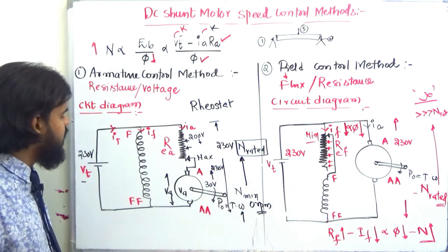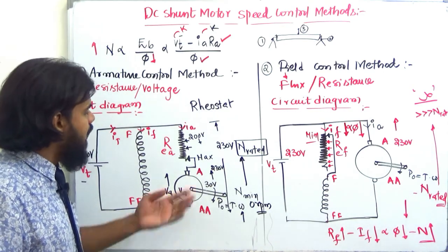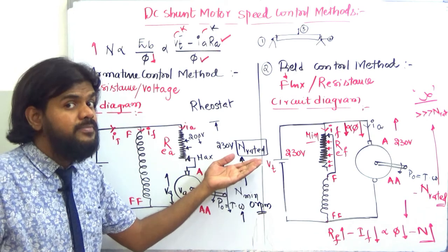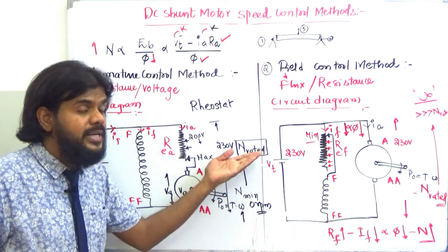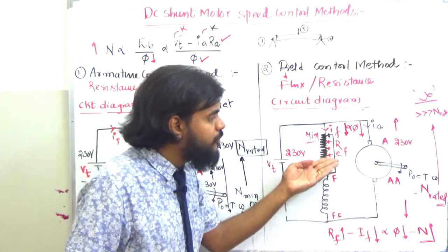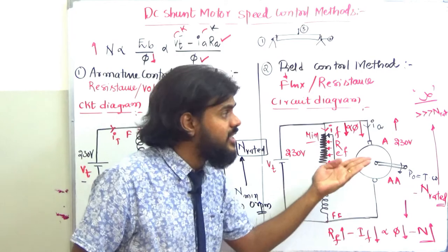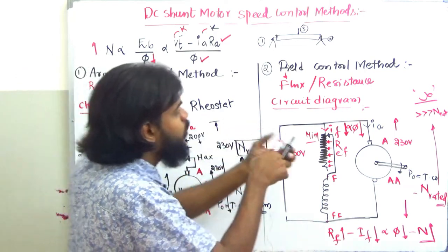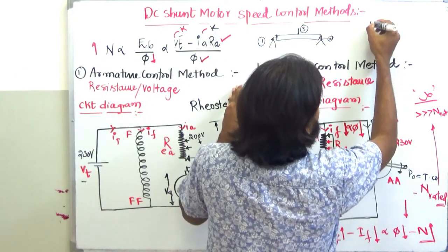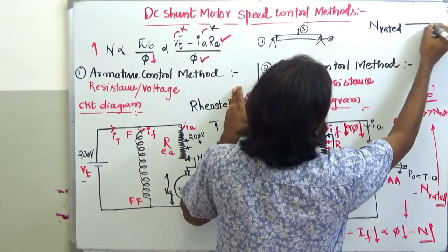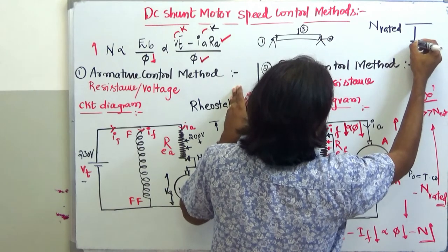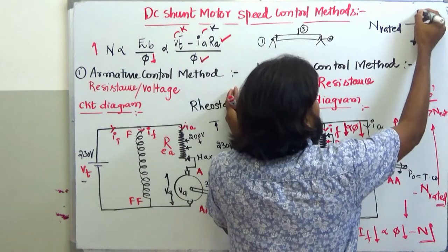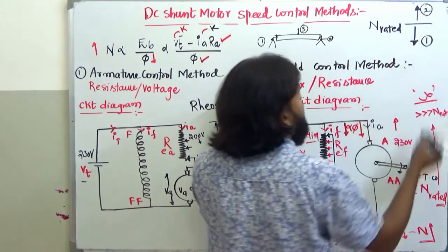To wrap up: as the armature resistance decreases slowly, the speed increases from zero rpm to rated rpm. And as the field winding resistance increases, the speed rises above rated. The conclusion is: method one gives speeds below rated; method two gives speeds above rated.